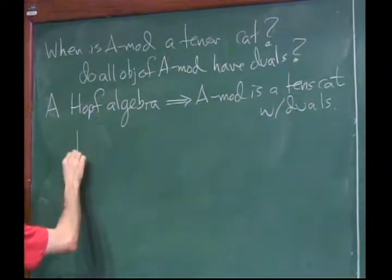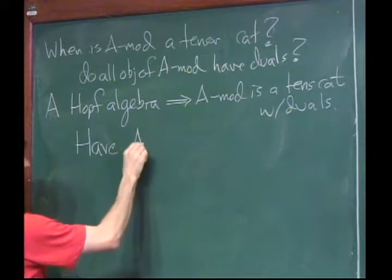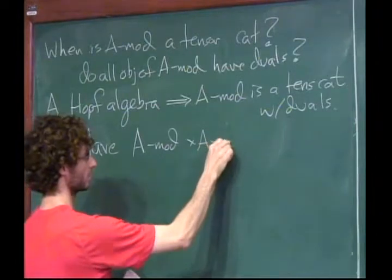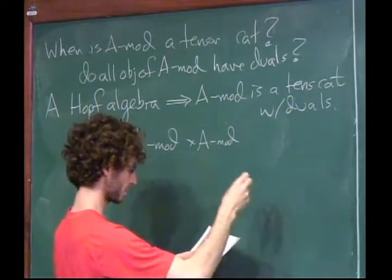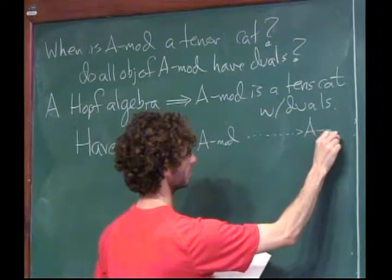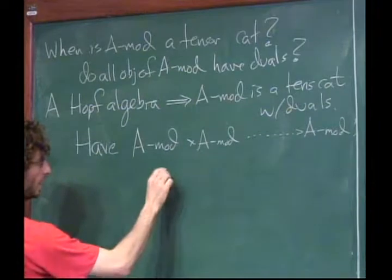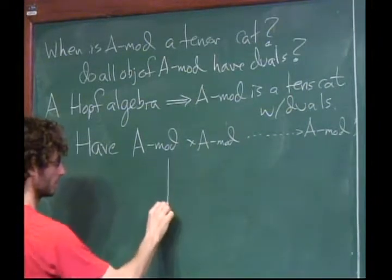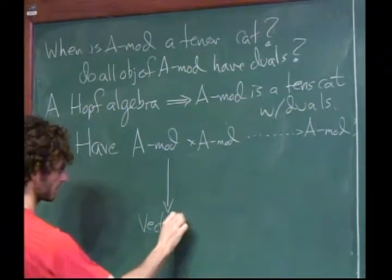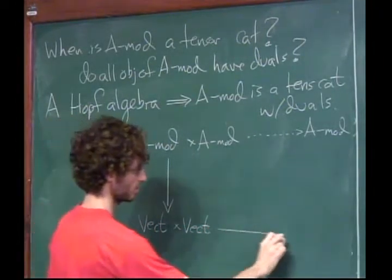The basic answer is that if A is a Hopf algebra, then A-mod is a tensor category with dual representations — that is, all objects have duals. I haven't said what a Hopf algebra is, but we're going to see that along the way by just trying to answer these questions.